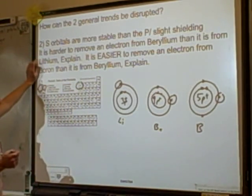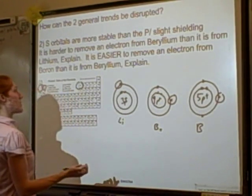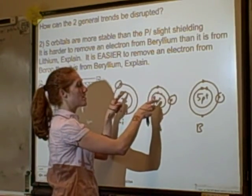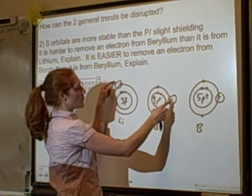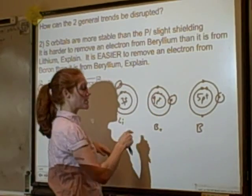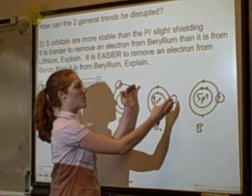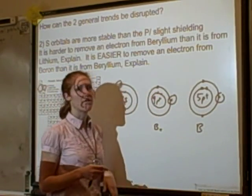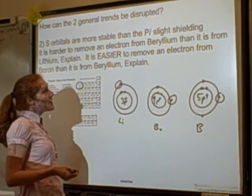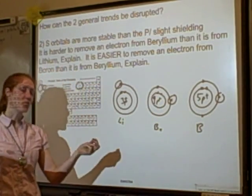It is harder to remove an electron from beryllium than lithium — we expected that. The outermost valence electron is attracted to three protons in lithium versus four protons in beryllium, so there's a greater Z effective for beryllium. But then the problem says it's easier to remove an electron from boron than beryllium — that's not what we'd expect.